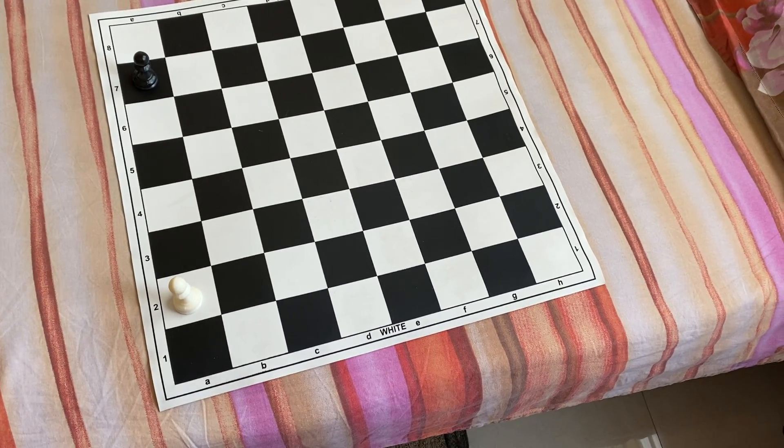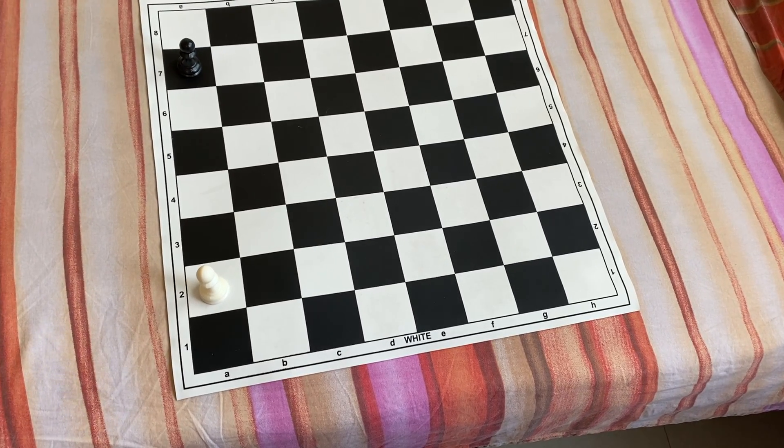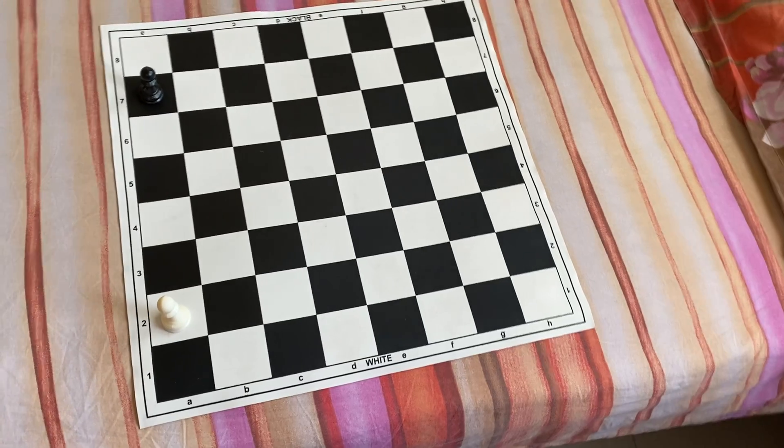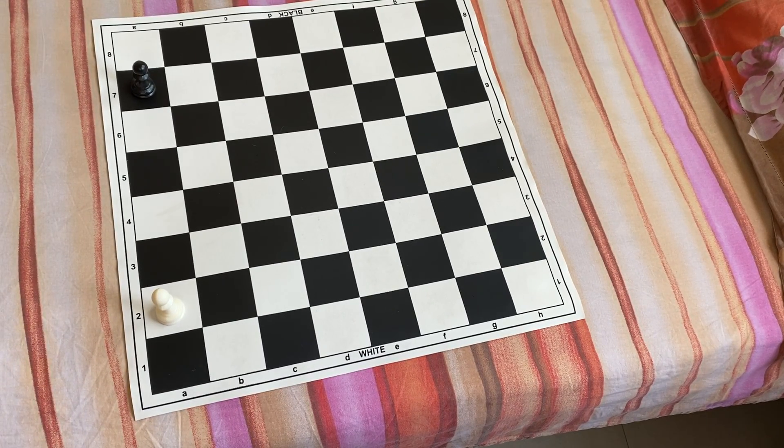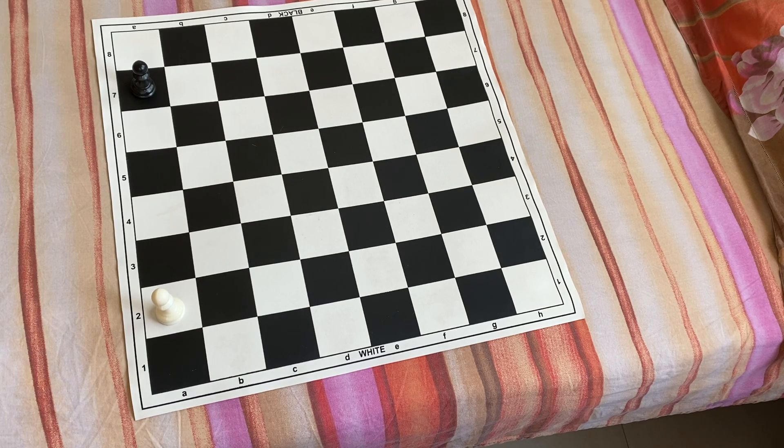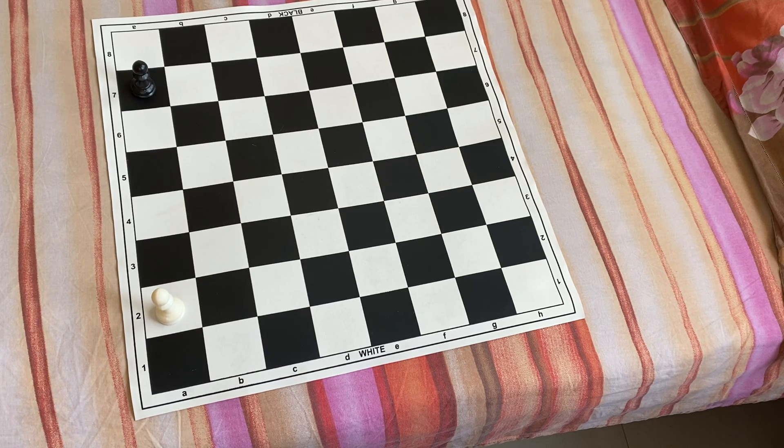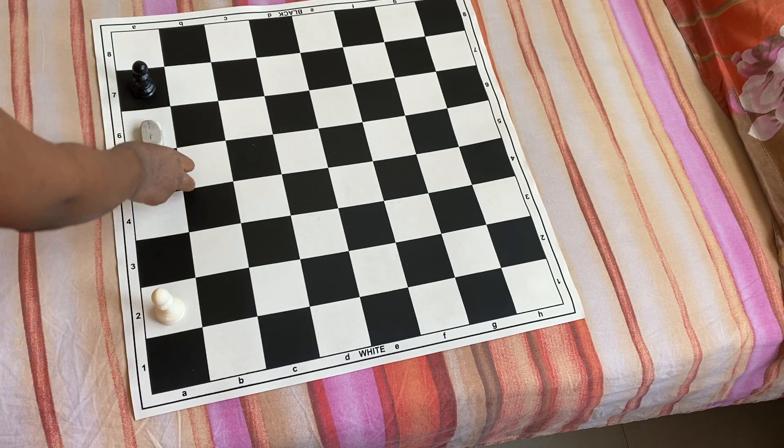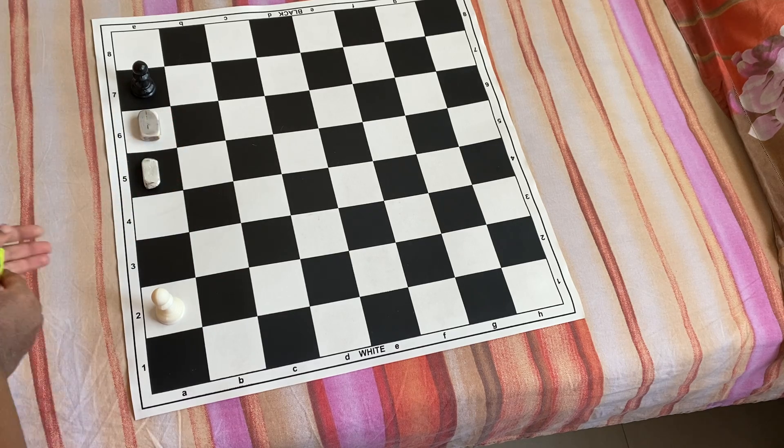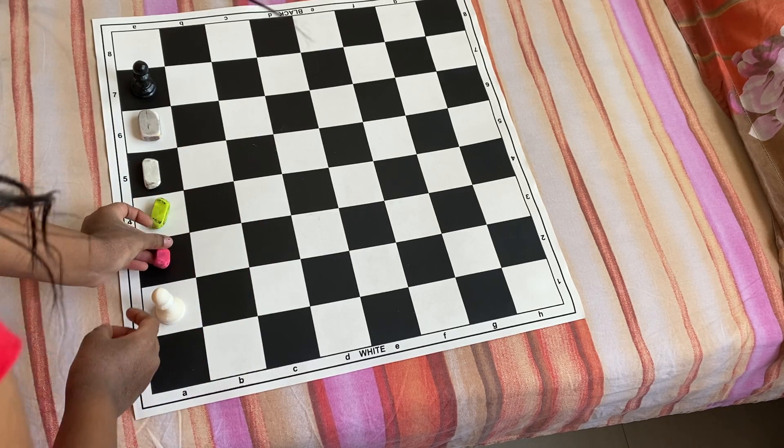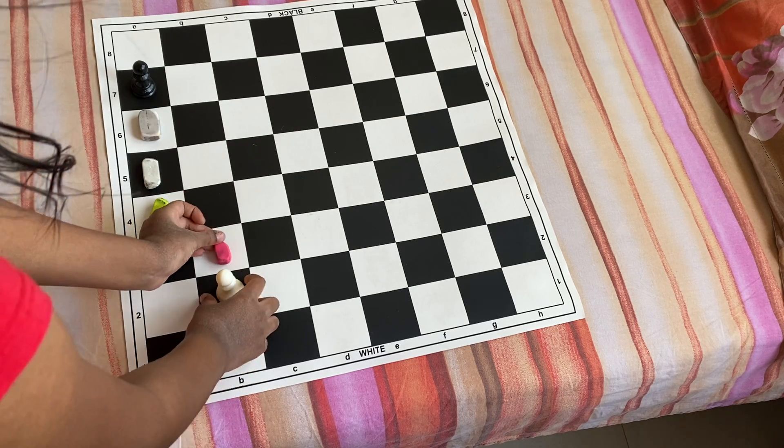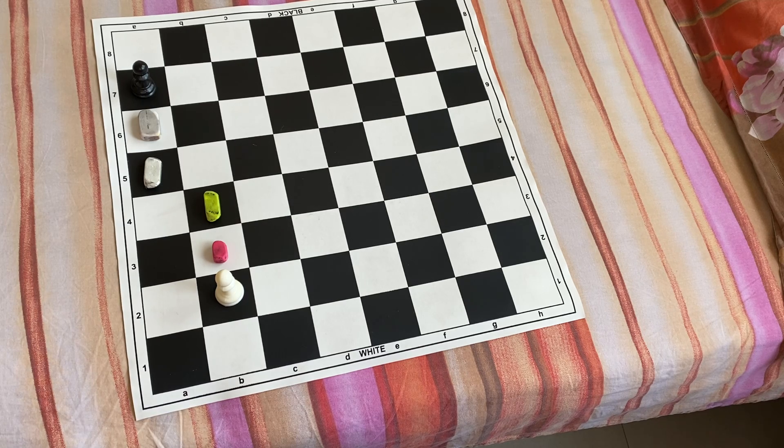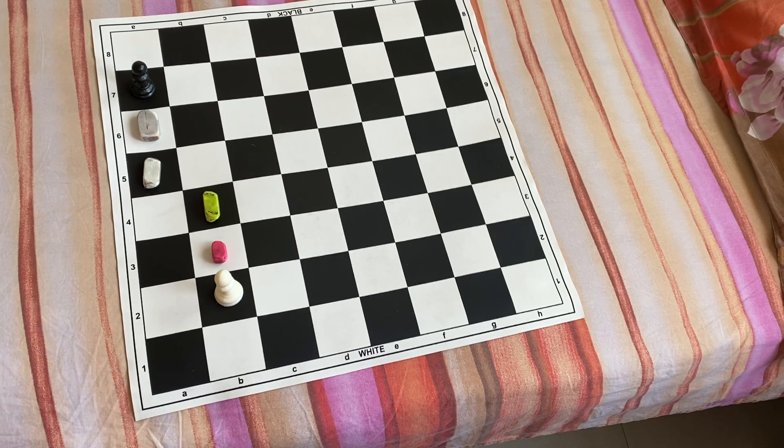So now, let us see. Now these pawns can totally move 2 steps forward or 1 step forward. Now I am going to use colored erasers for white and white erasers for black to mark where they can move 1 or 2 steps forward. So these are the places where these pawns can move.